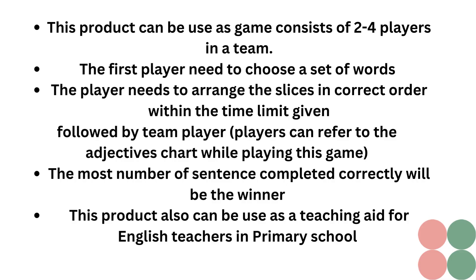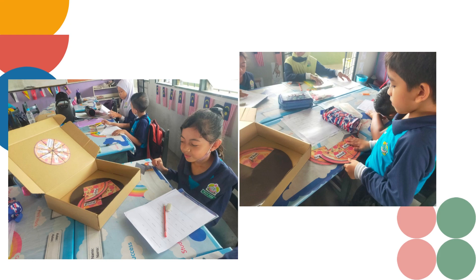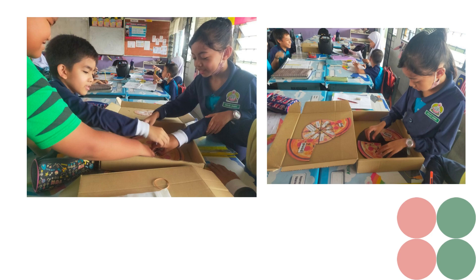How does it work? This product can be used as a game consisting of 2 to 4 players in a team. The first player needs to choose a set of words and arrange the slices in the correct order within the time limit given, followed by the team players. Players can refer to the adjective charts while playing. The team with the most number of sentences completed correctly will be the winner.